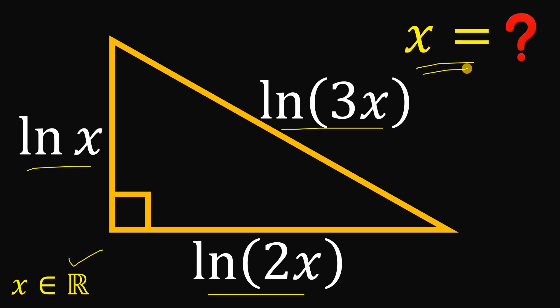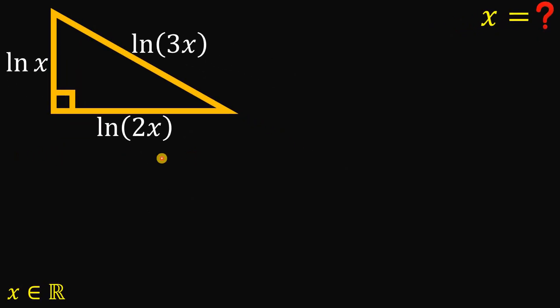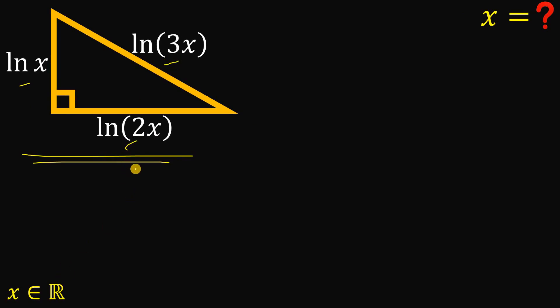Now suppose you paused this video — let's see if you got the correct answer. So given this right triangle with side lengths of ln x, ln of 2x, and ln of 3x, our goal is to find the real value of x that satisfies this right triangle.